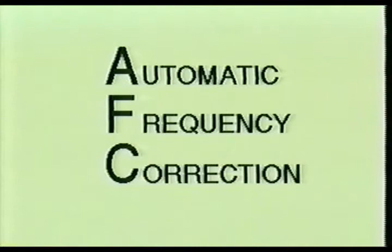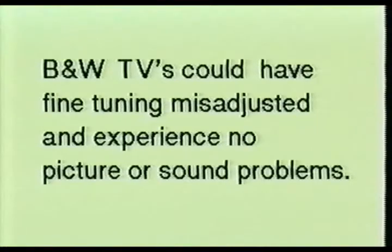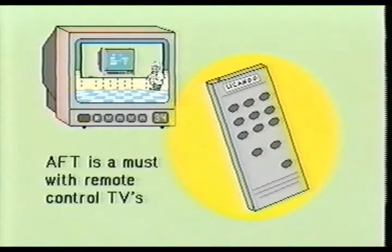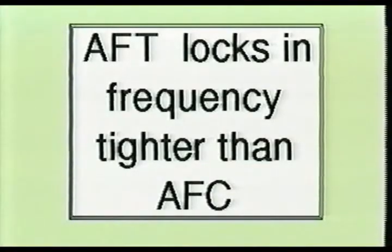In this part of the video, we will examine the automatic frequency control — also known as automatic frequency correction — and take a look at why this stage becomes known as the automatic fine tuning section. In black and white television sets, the fine tuning can be out of adjustment by a considerable amount with no apparent lack of picture or sound quality. However, with color TVs, a tighter frequency tolerance is necessary because the color circuits require precise tuning. Also, with the advent of TV remote control devices, automatic fine tuning is a must for consumer convenience. Although the terms AFC and AFT may refer to the same stage, this tighter frequency lock distinguishes the automatic frequency control from the automatic fine tuning.